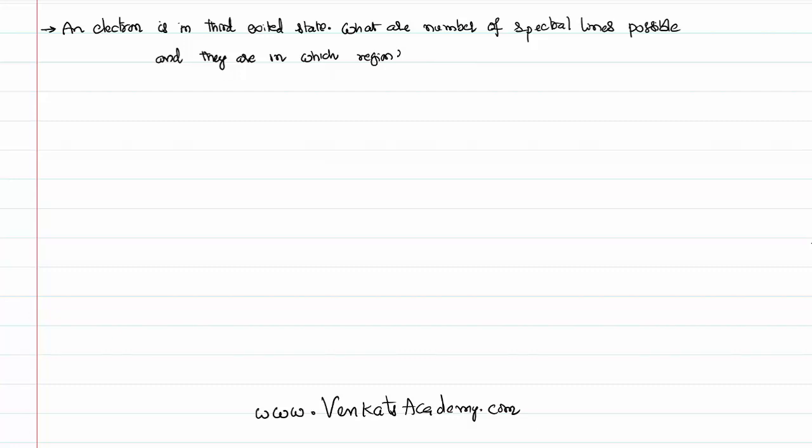Hello everyone, welcome to this video lesson. In this video lesson we are solving a problem from the topic of atoms based on the Bohr's atomic model. The problem says: an electron is in the third excited state, what are the number of spectral lines possible and they are in which region?